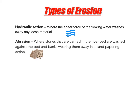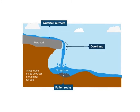It is these erosional processes combined with other factors that lead to the creation of waterfalls. Waterfalls develop when a band of hard, resistant rock like granite lies over a softer, less resistant rock like sandstone. As the water flows over both rock types, erosion sets to work through the processes of hydraulic action and abrasion. With the softer rock being less resistant, it is eroded much quicker.